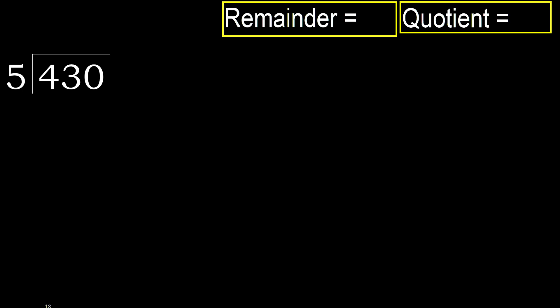430 divided by 5. 4 is less, therefore next. 43 is not less, therefore we work with 43. 5 multiplied by which number is nearest to 43, but not greater?